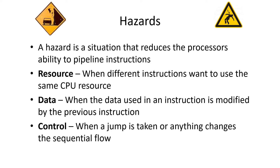Pipelining has several hazards. Hazards are things that reduce the processor's ability to pipeline instructions. There are three flavors of hazards. Resource hazards occur when you can't do something in parallel because there's not enough processor, not enough ALU, access to memory, or other computing resources to do it in parallel.